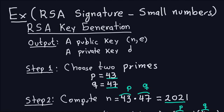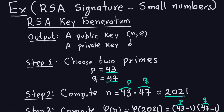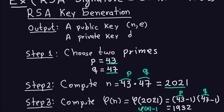Hello and welcome. This video covers an example of the RSA signature. We'll use small numbers. For the RSA signature, we first need to set up the signature, which is basically the same setup as RSA key generation. We need a public key and a private key. The public key is the modulus and the exponent, and the private key is the private exponent.